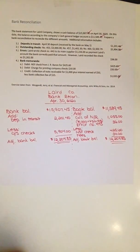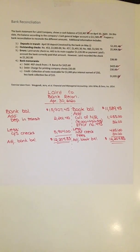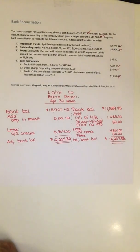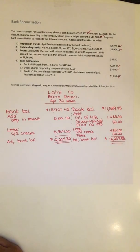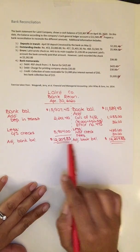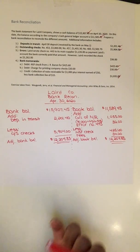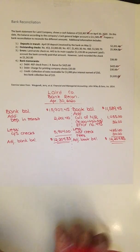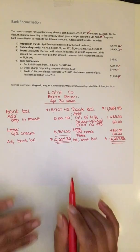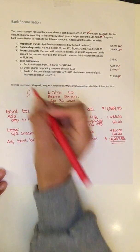Welcome back. Step two. We prepared the bank reconciliation report in the last video for Liared Company. Now we're not done yet. Preparing the reconciliation helps us identify any differences and ensure that everything's accounted for — no fraud or unexpected items. Once we've done that, that's the first step.